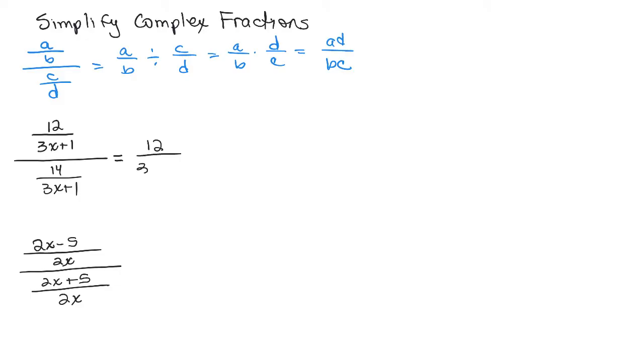So we're going to write that as 12 over 3X plus 1 divided by 14 over 3X plus 1. And now we could rewrite that as 12 over 3X plus 1 times the reciprocal of 14 over 3X plus 1.